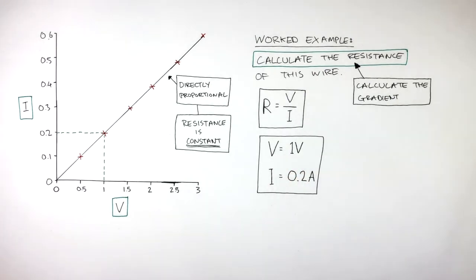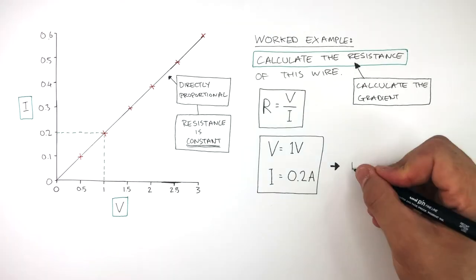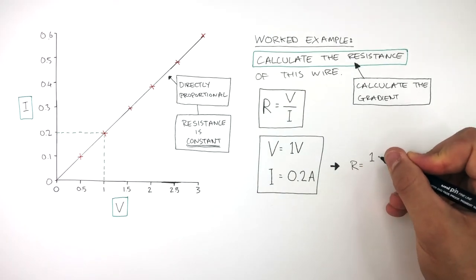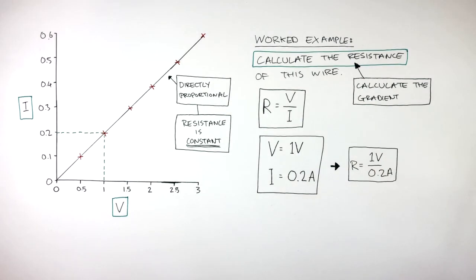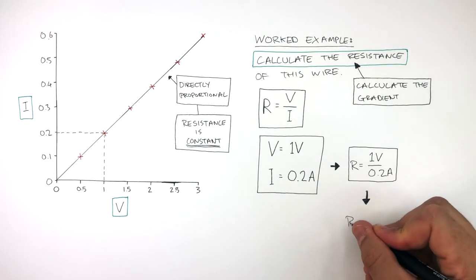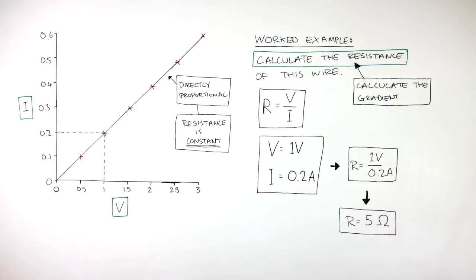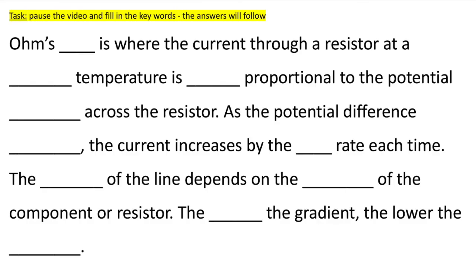It's important to note that you could have chosen any potential difference and current value from this graph and you will always get the same resistance value, as we're dealing with an ohmic conductor. Now if we put this data into the equation: resistance equals 1 volt divided by 0.2 amps. So our final answer is resistance equals 5 ohms. Pause the video here to practice the key words. The answers will follow.